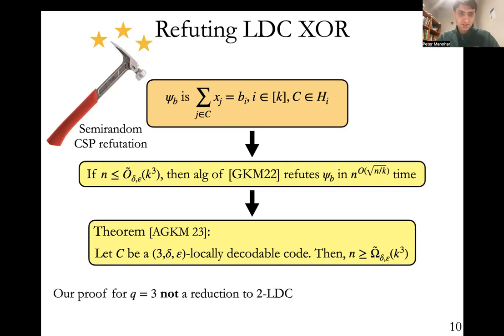The important thing here is the proof is not a reduction to a 2-LDC. It goes through this connection to XOR instances that I explained before. And indeed, the algorithm that we'll be using to refute will do transformations to this XOR instance that are very not LDC-like. They're only natural in the context of viewing the instance really as an XOR instance and not viewing it as an LDC. And so this connection with CSPs is really giving us a new approach here. Perhaps this will lead to improved lower bounds even beyond k cubed or for larger q.